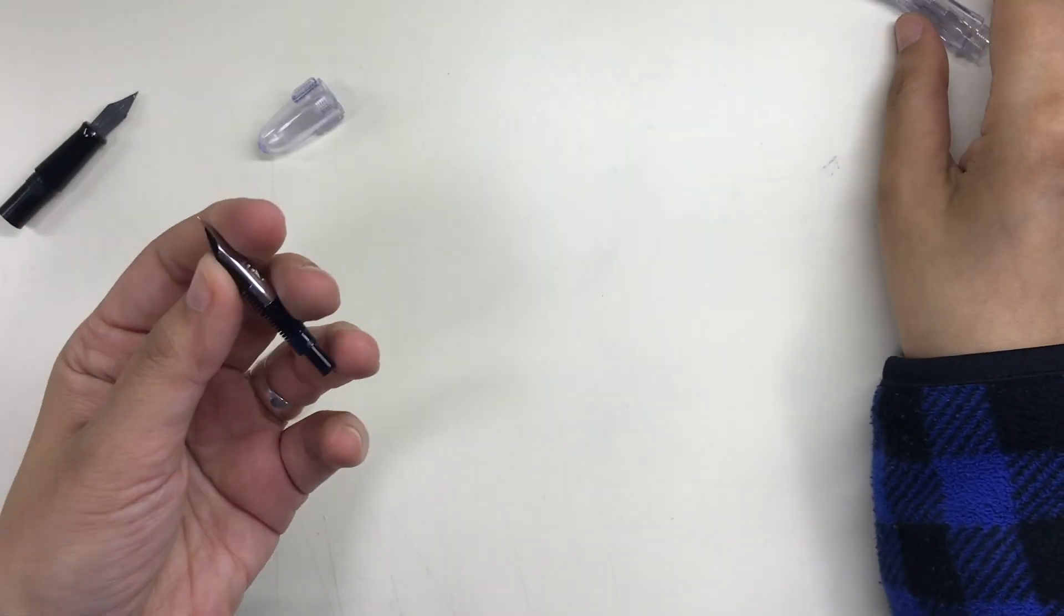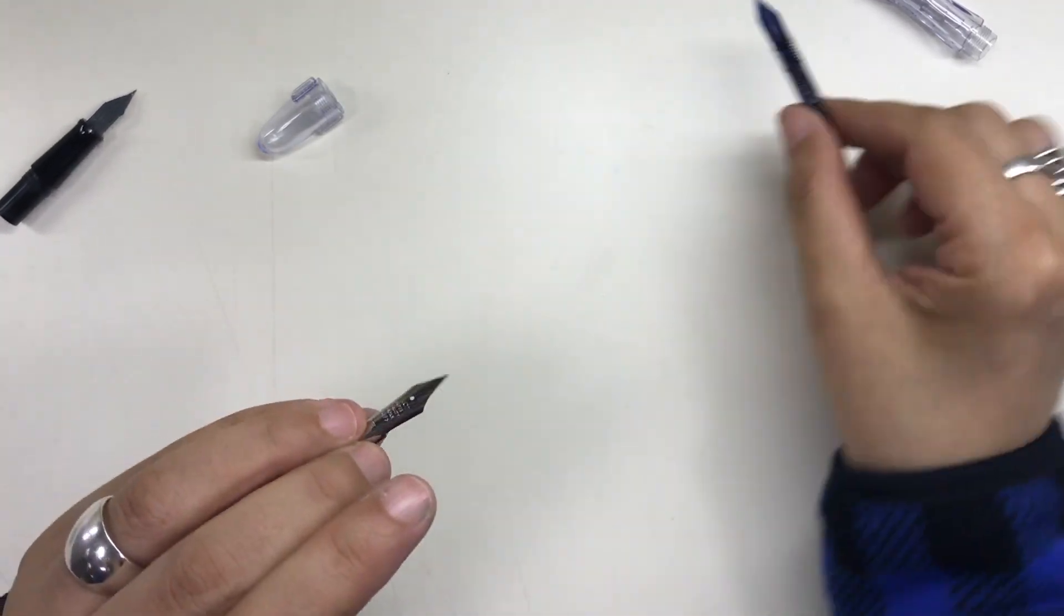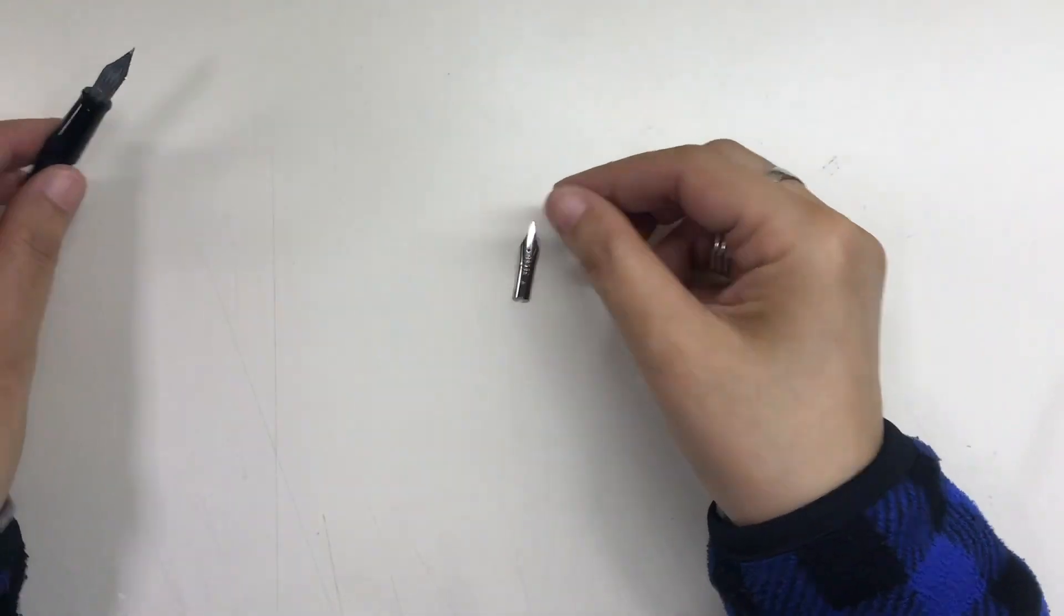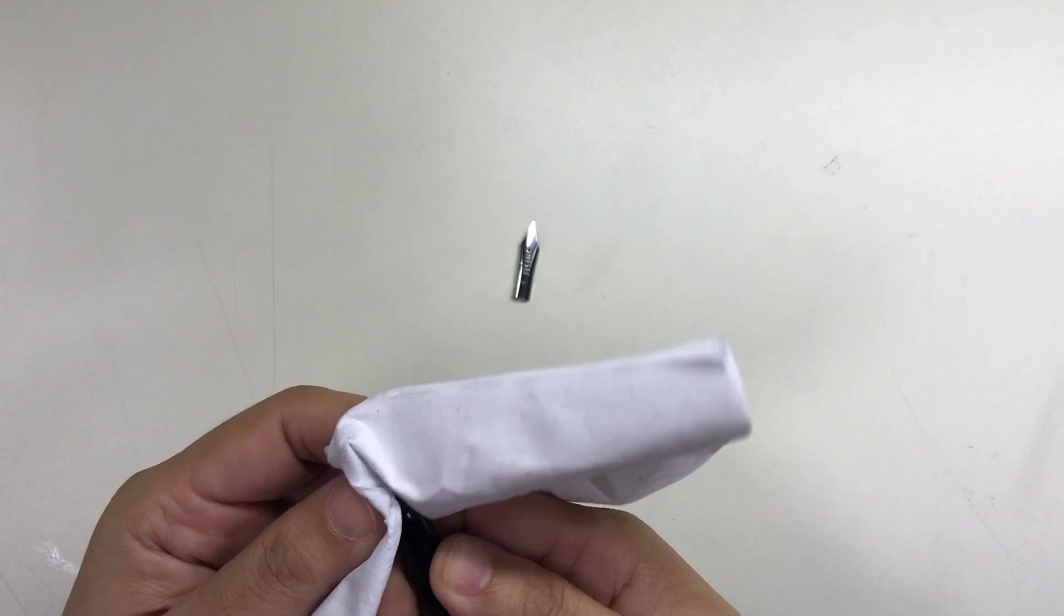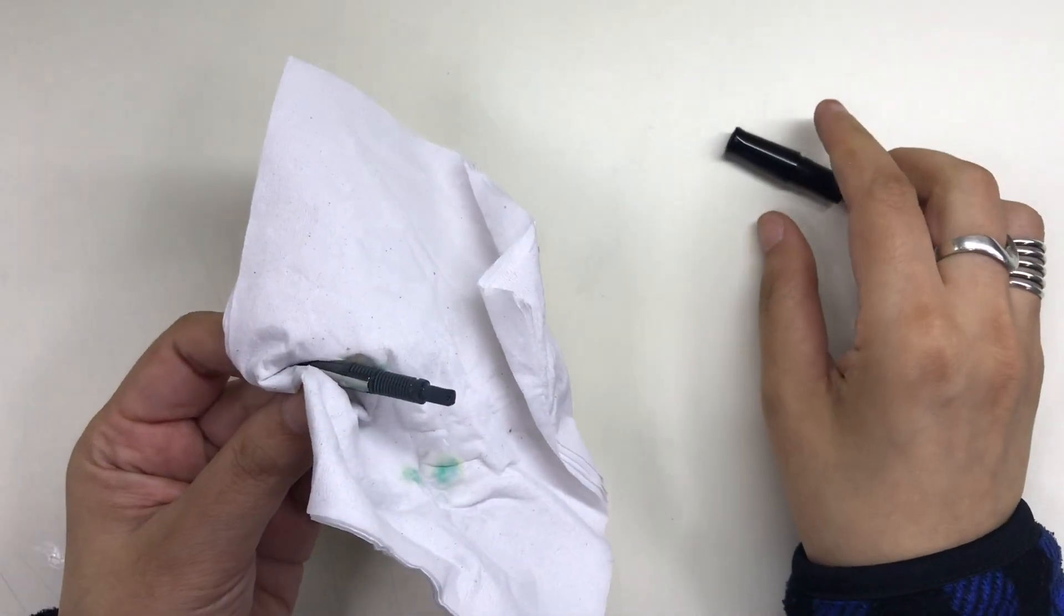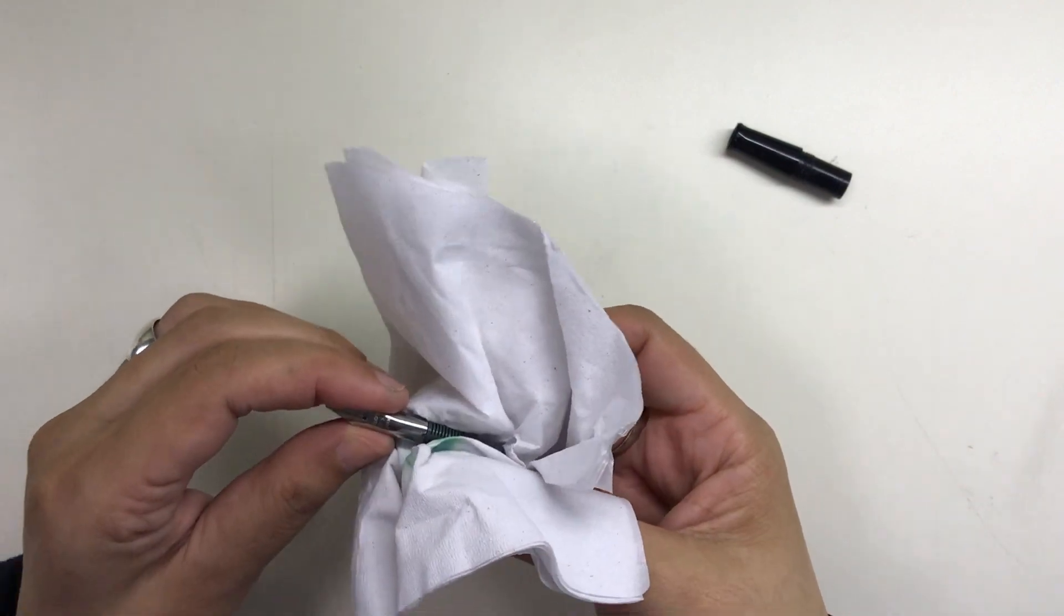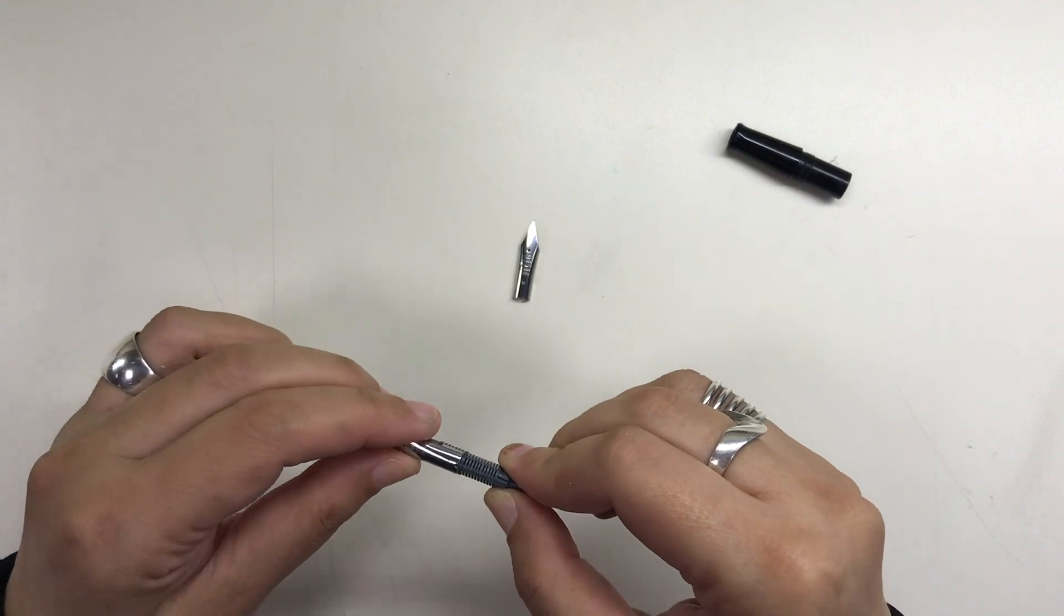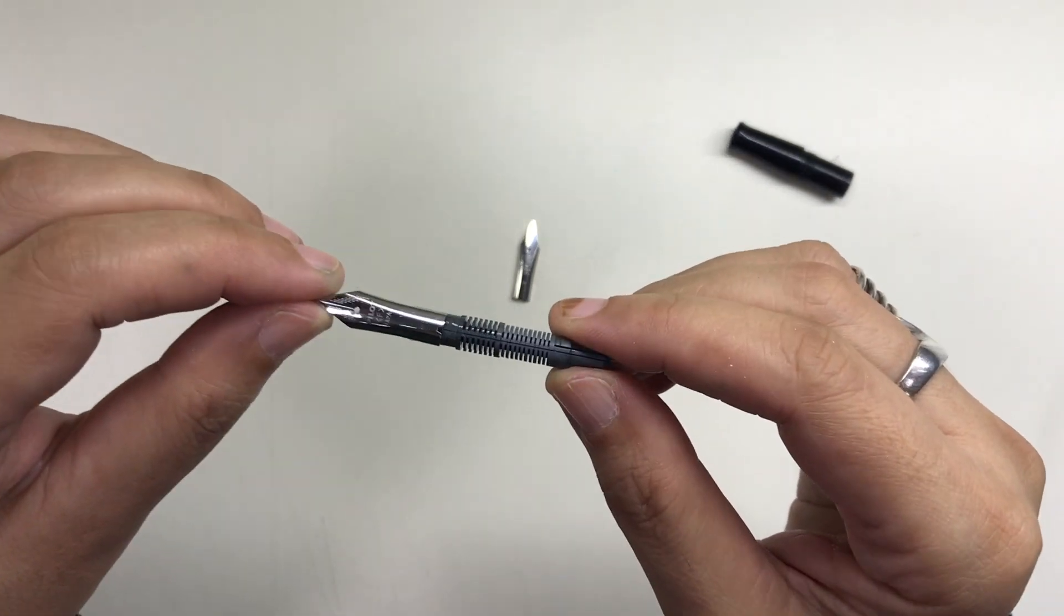I did the same thing to the nib and feed of the Pilot Metropolitan, but I used some tissue to protect my fingers from some tiny amount of watery ink that was left behind after I washed and rinsed the pen. And as you can see, the nib on both pens are just placed on the feed, like on top of the feed, and you can take them off simply like so.